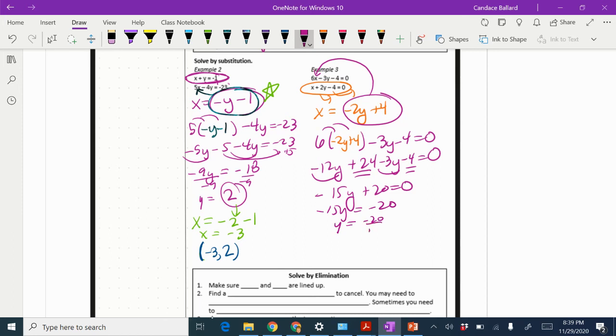And then I'm going to divide by negative 15, which is going to give me, when I reduce that, 4 thirds, because 5 goes into both of those and they turn positive.